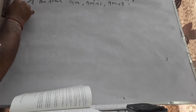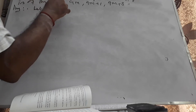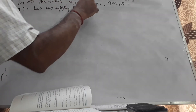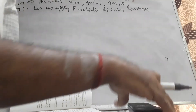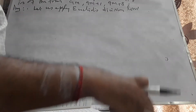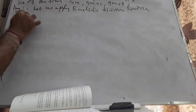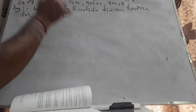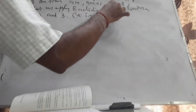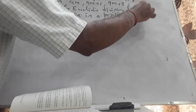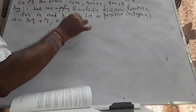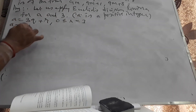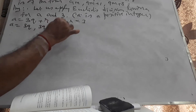Let us apply Euclid's division lemma for a and 3, where a is a positive integer. Now a equals 3Q+R, where R is less than 3 — so R equals 0, 1, or 2. Therefore a is either 3Q, or 3Q+1, or 3Q+2.